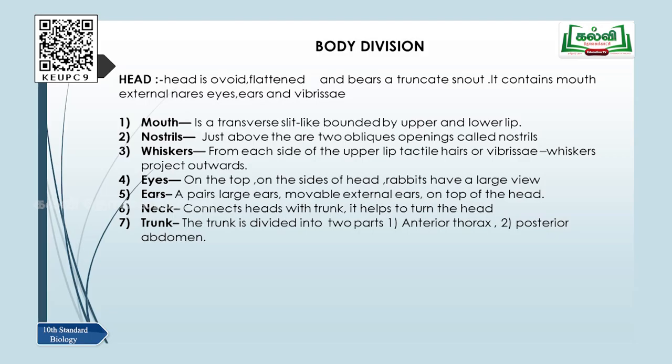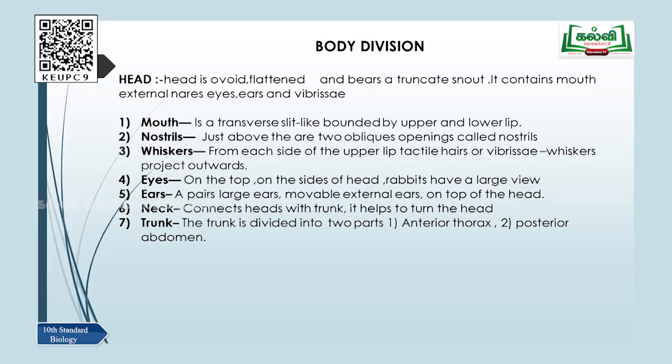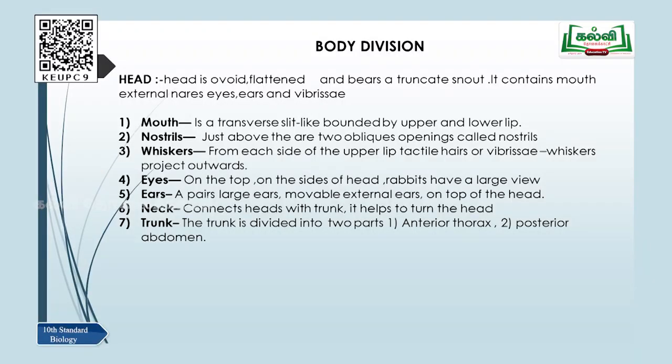Let us understand the body division of the rabbit. The rabbit's body is divided into the head. The head is ovoid — meaning oval shaped — and flat, and it bears a truncate. The mouth area is like a U-pin. It contains the mouth, external nose, eyes, ears, and vibrissae. Vibrissae means on the upper lip there are hair-like projections, which can also be called whiskers.